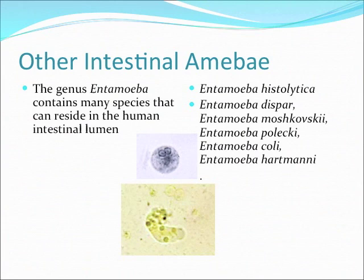Entamoeba histolytica is not the only amoeba you can find in the human intestinal lumen. You can also find others called E. dispar, E. moshkovskii, E. polecki, E. coli, and E. hartmanni. But from all of these, the only one that causes disease is Entamoeba histolytica.